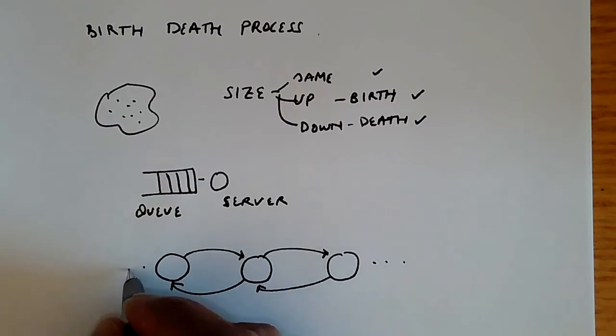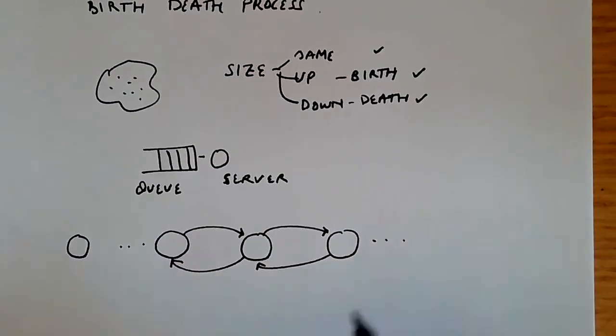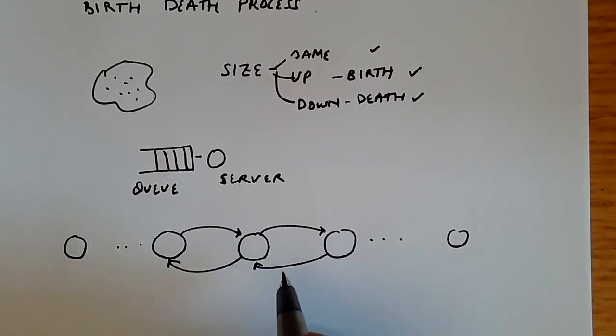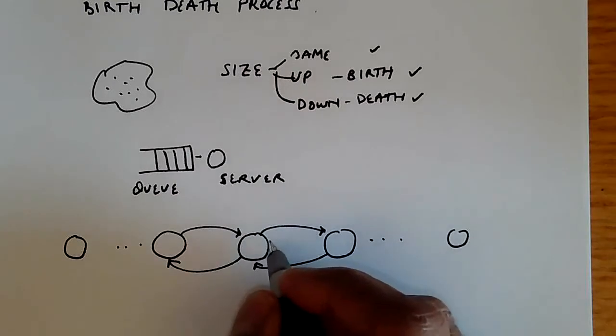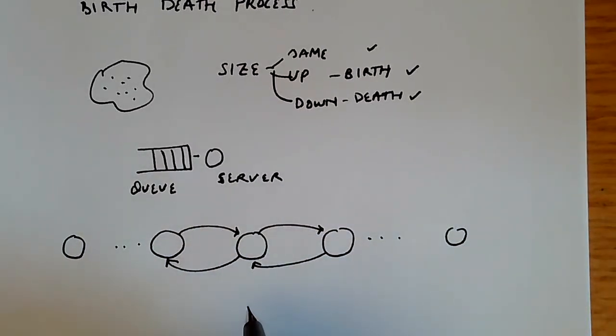Of course, there's going to be a state zero below which the population size is zero, and there's perhaps a maximum size. But in between, we only have transitions from states to adjacent states. This is the characteristic pattern that represents a birth-death process.